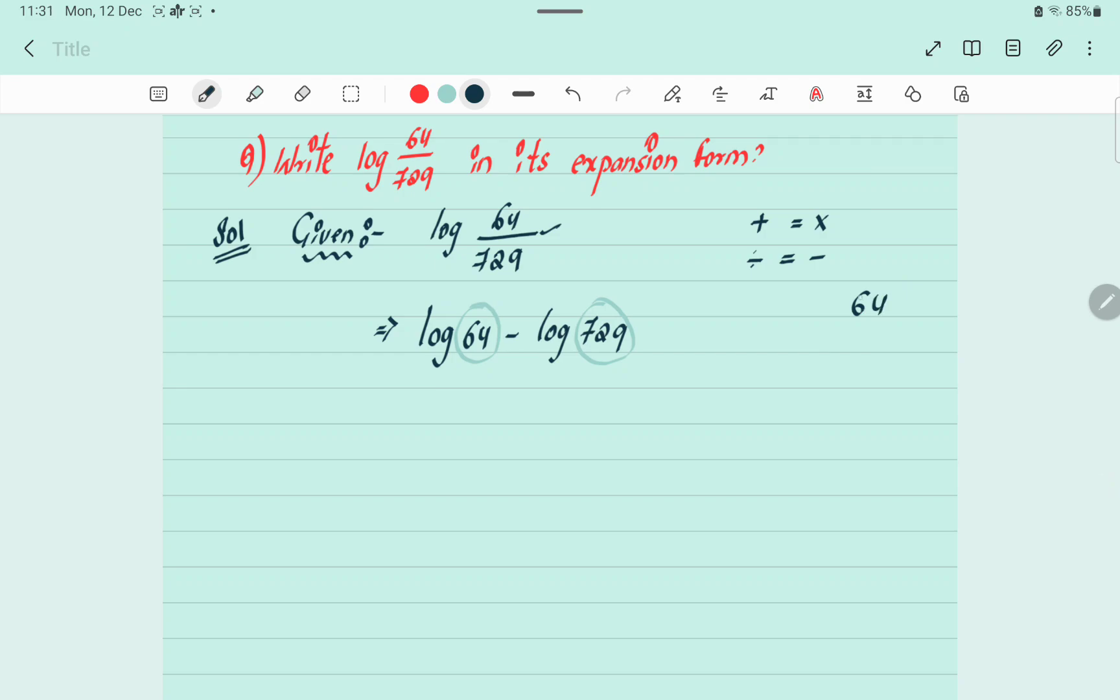So once I will show you here. 64 LCM: 2 into 32, 2 into 16, 2 into 8, 2 into 4, 2 into 2. So 2 is repeating how many times? 1, 2, 3, 4, 5, 6 times. 2 to the power of 6.